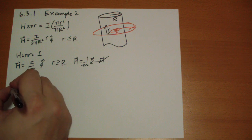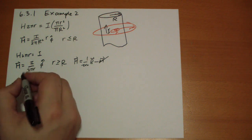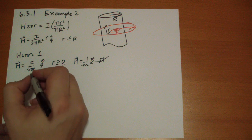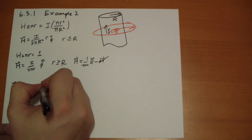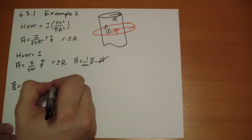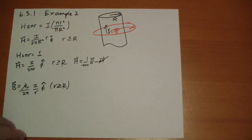So we get the B vector is equal to mu naught over 2 pi, I over r in the phi hat direction. That's when r is greater than R. Okay.